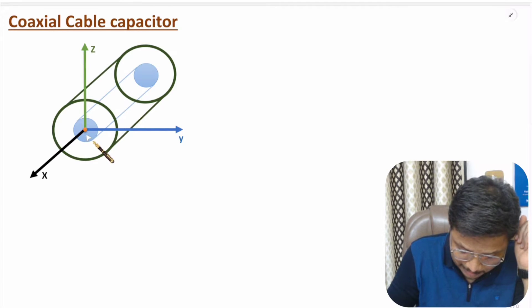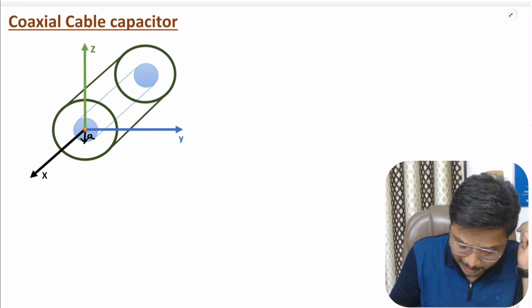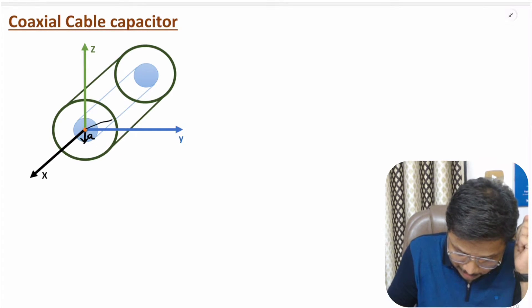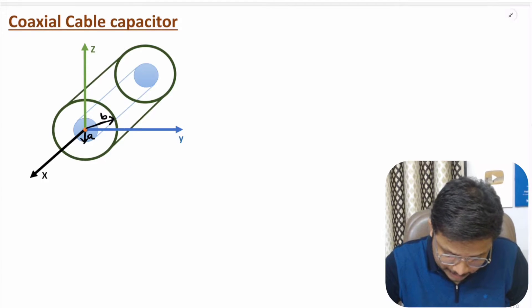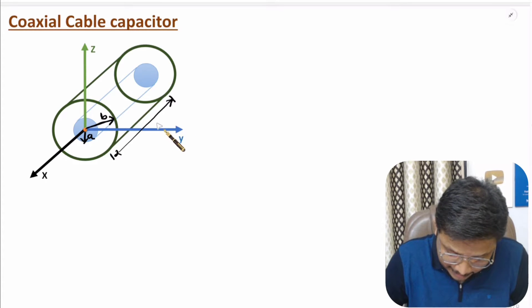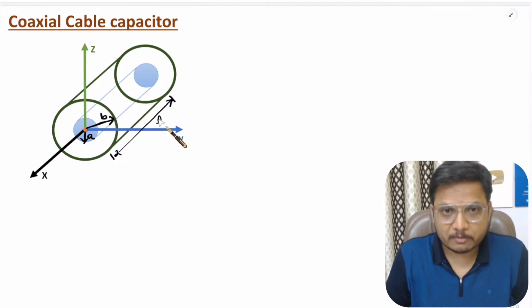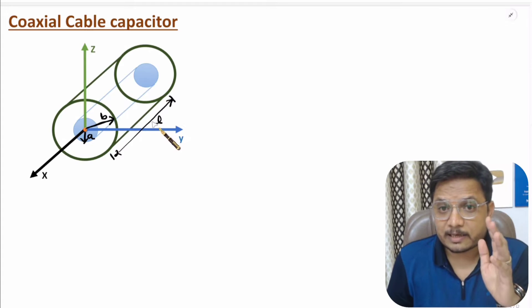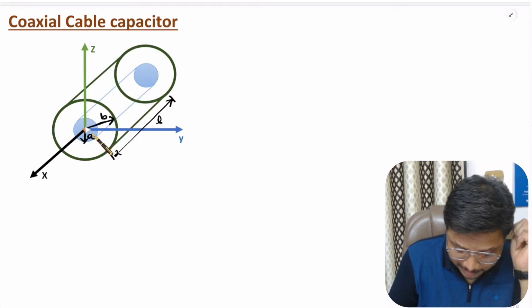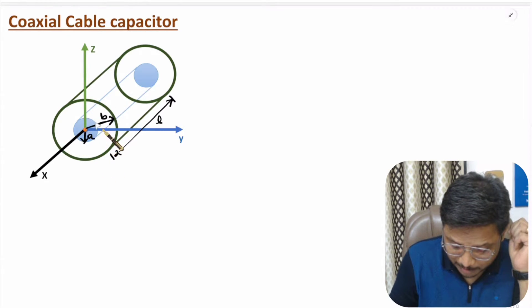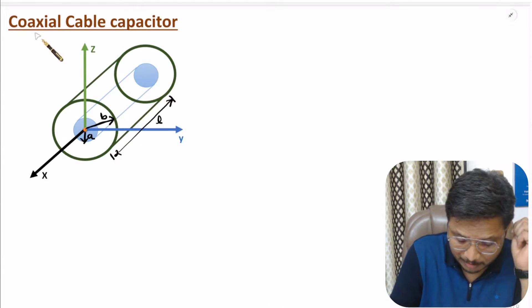You need to understand the dimensions of coaxial cable capacitor. The inner conductor, let us say, is having radius small a, and the outer conductor, let us say, is having radius small b. Here we are considering length of this coaxial cable as L. By considering these notations, we will derive the equation of capacitance for the given coaxial cable.